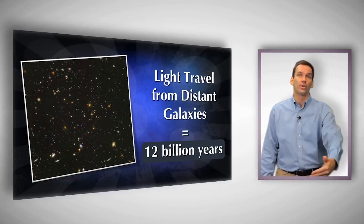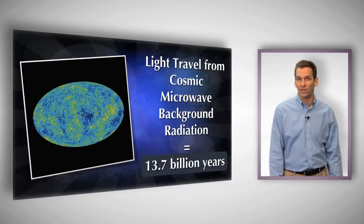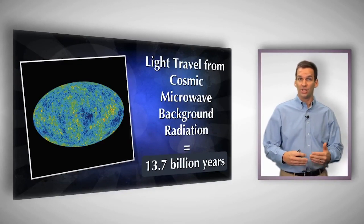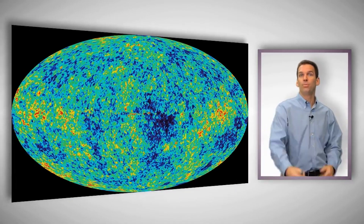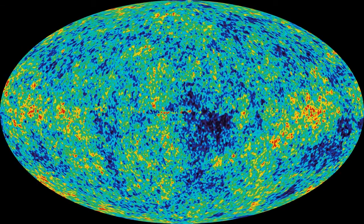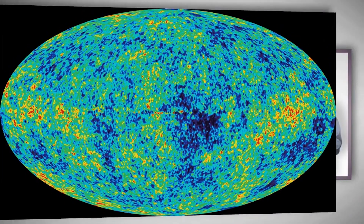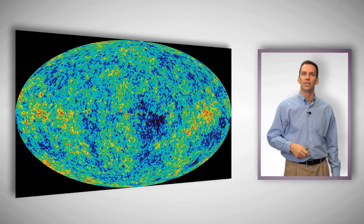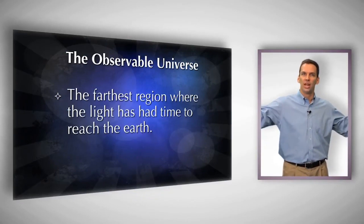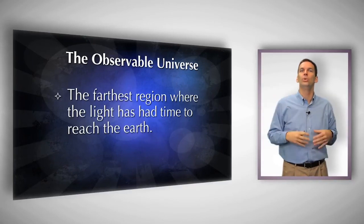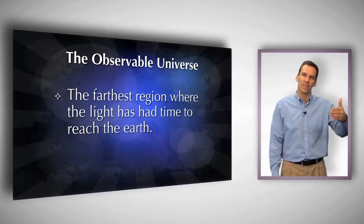If we keep pushing further out and ask how far we can see, we eventually run into the cosmic microwave background radiation. That radiation has taken just about 13.7 billion years to reach us — so it's a picture of the universe from 13.7 billion years ago. Given that the universe is only 13.7 billion years old, if we try to look any further, the light from objects at greater distances has not had time to traverse the distance to us. This defines the observable universe: the furthest reaches from which light could have traveled to Earth within the age of the universe.